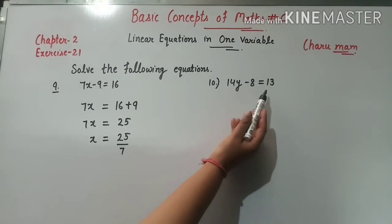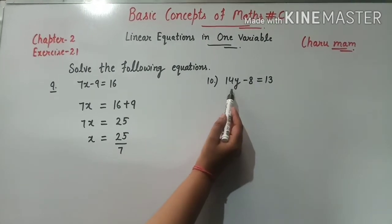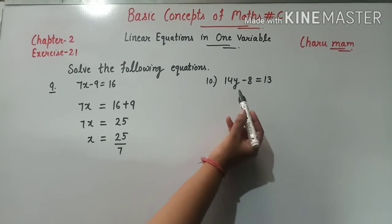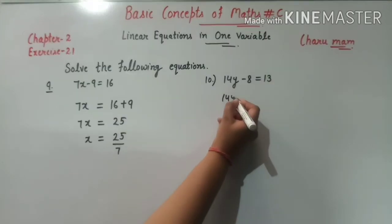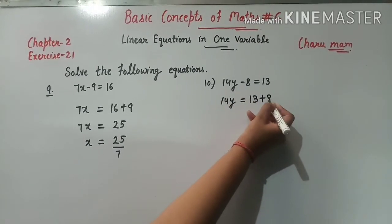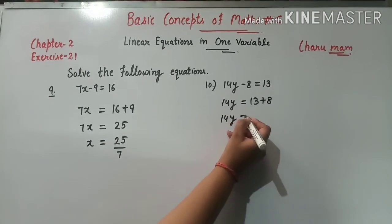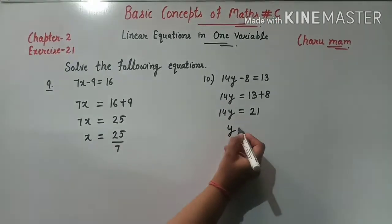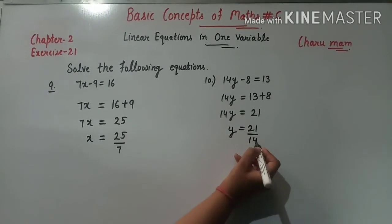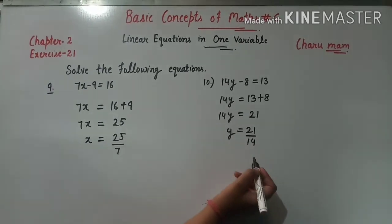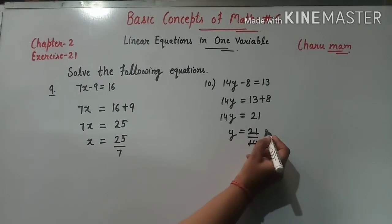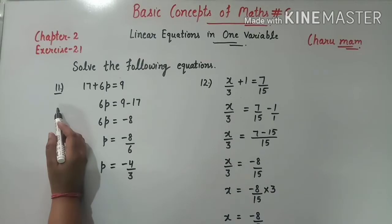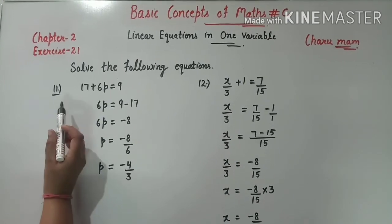Question 10: 14y minus 8 equals 13. Minus 8 right side जाएगा तो plus 8 हो जाएगा: 14y = 13 + 8 = 21. 14 right side divide में जाएगा; simplify: 7×2=14, 7×3=21, so y की value है 3 upon 2.